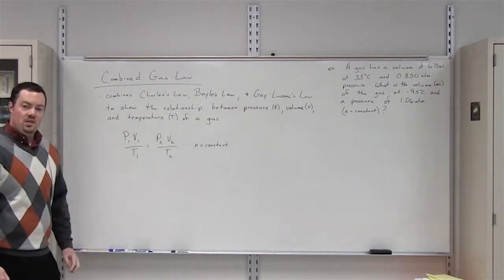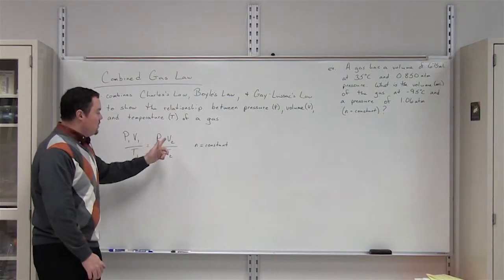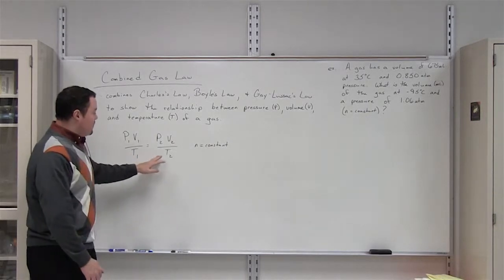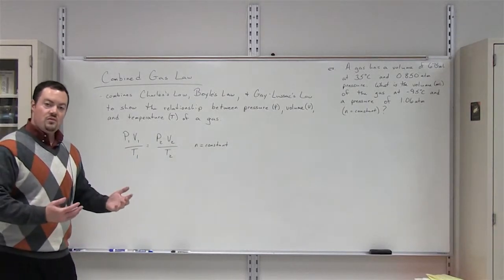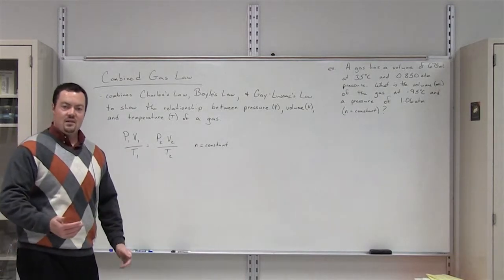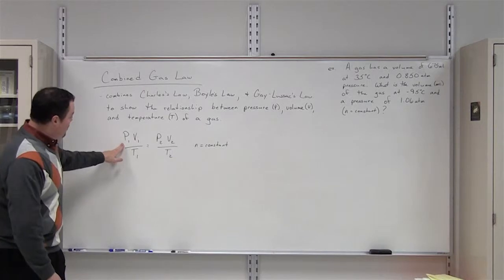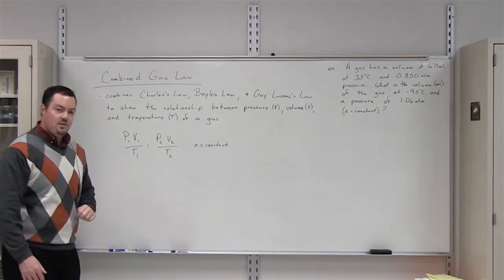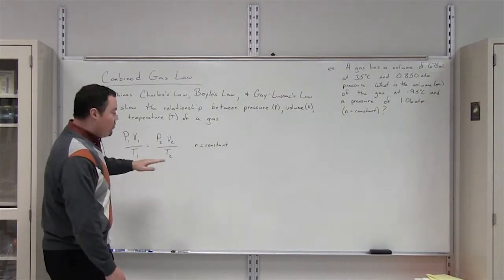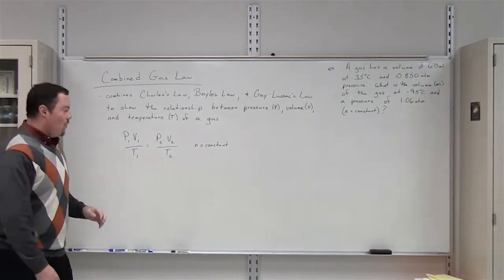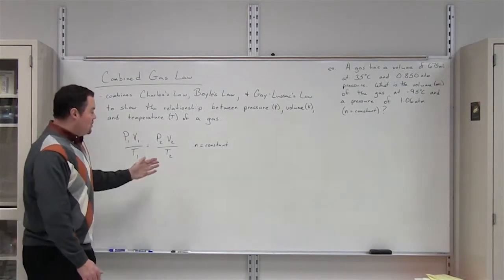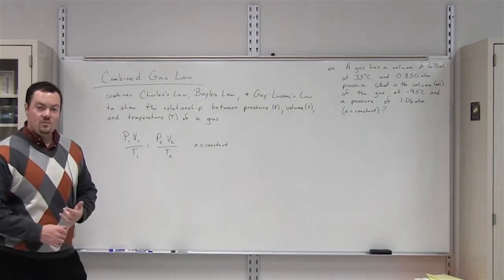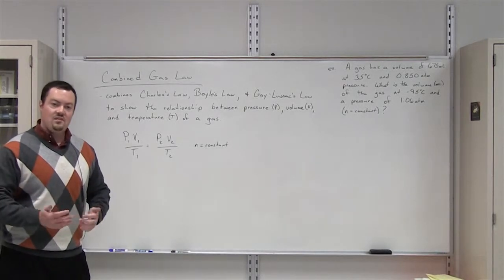The formula for the combined gas law is P1 times V1 over T1 is equal to P2 times V2 divided by T2. These subscripts of 1 and 2 just refer to separate conditions that the gas is under. This assumes that your amount of gas does not change.